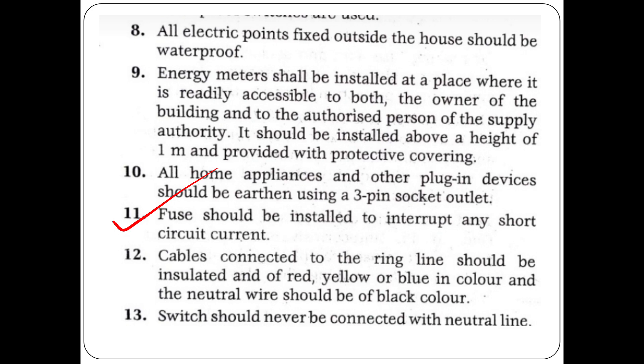Cables connected to the ring main should be insulated and red, yellow or blue in color. The neutral wire should be black in color. Switches should never be connected to the neutral wire.